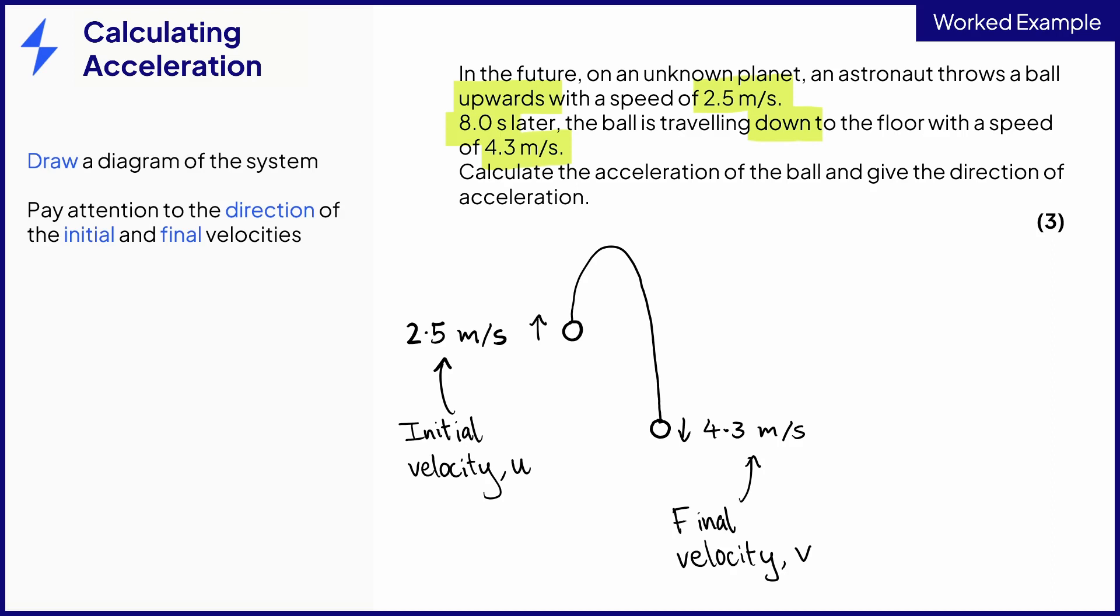To show that these velocities are in different directions in our equation, we need to give them different signs. So one will be positive and the other will be negative. We can choose which direction is positive, either is fine. But we'll say upwards is a positive velocity, so downwards is therefore a negative velocity.